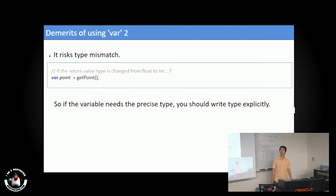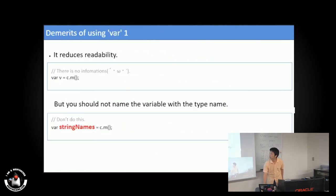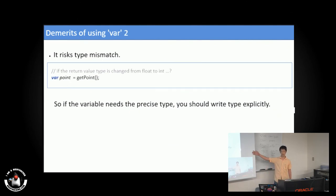The second demerit is it risks type mismatch. If the type mismatch happens, maybe I don't know about this because the compiling error may not happen. So if the variable needs a precise type, you should write the type explicitly.